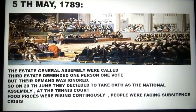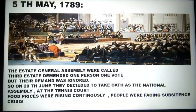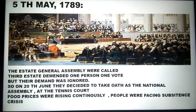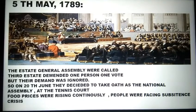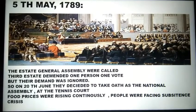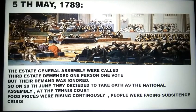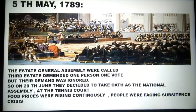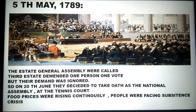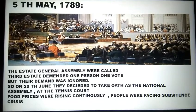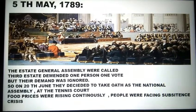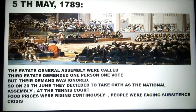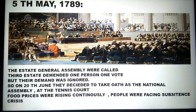On the 5th of May 1789, a general assembly was called where all three estates participated. But the concept for the first and second estates was one person, one vote. The third estate had no such rights — as a whole they had only one vote. The third estate started demanding the same criteria: one person, one vote, because the majority population was in the third estate. But the demand was ignored.